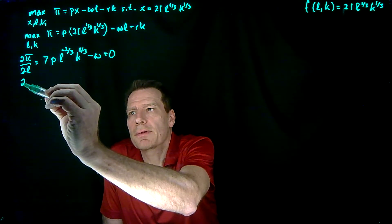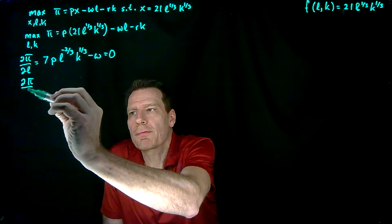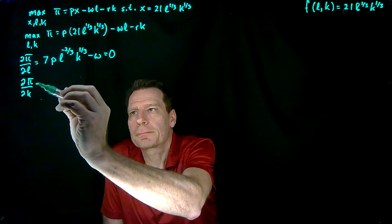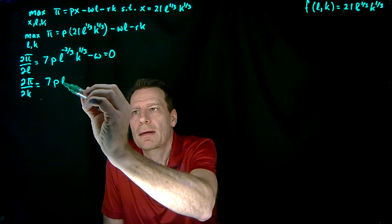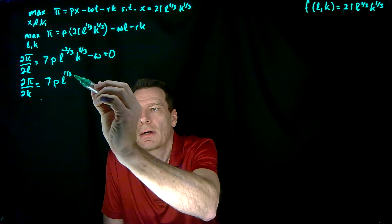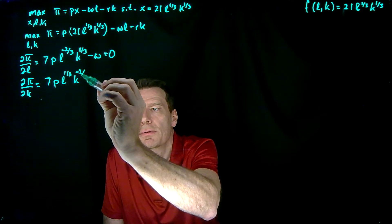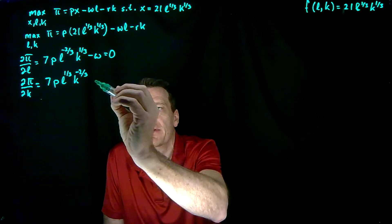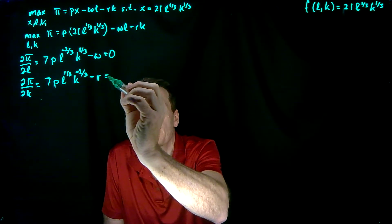The second derivative: we take the derivative of profit with respect to capital. That's going to be equal to 7P times L to the one-third K to the minus two-thirds, minus R, and that has to equal zero.